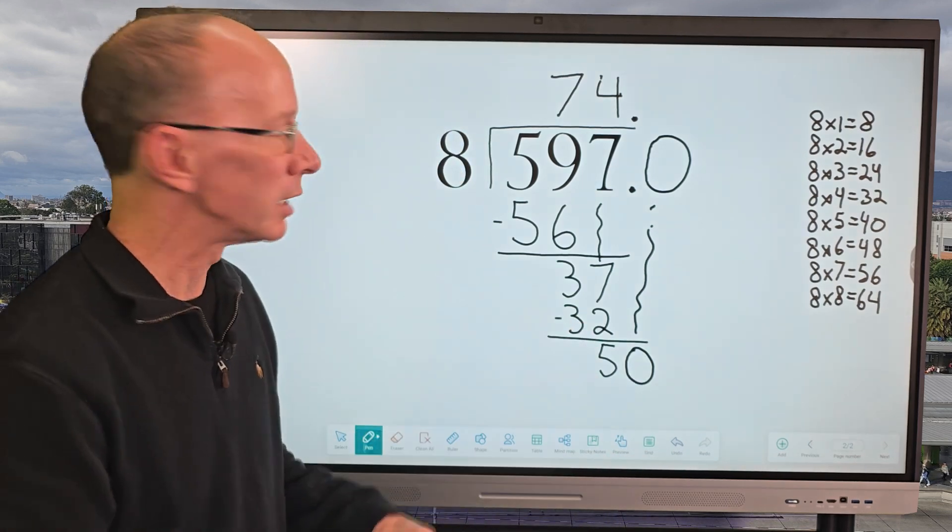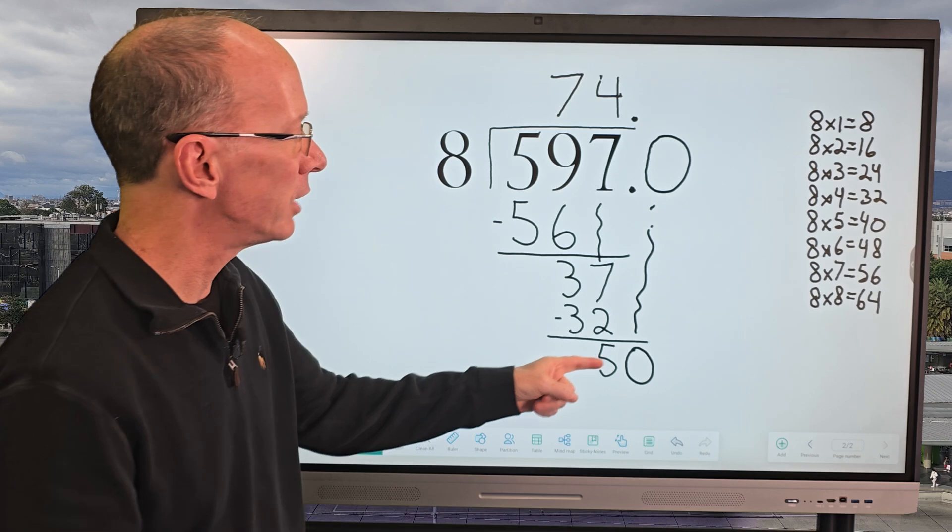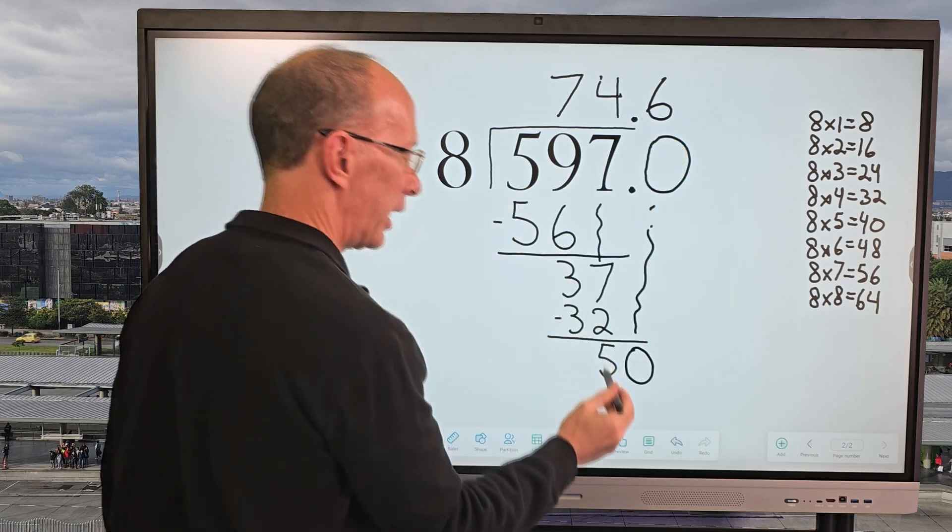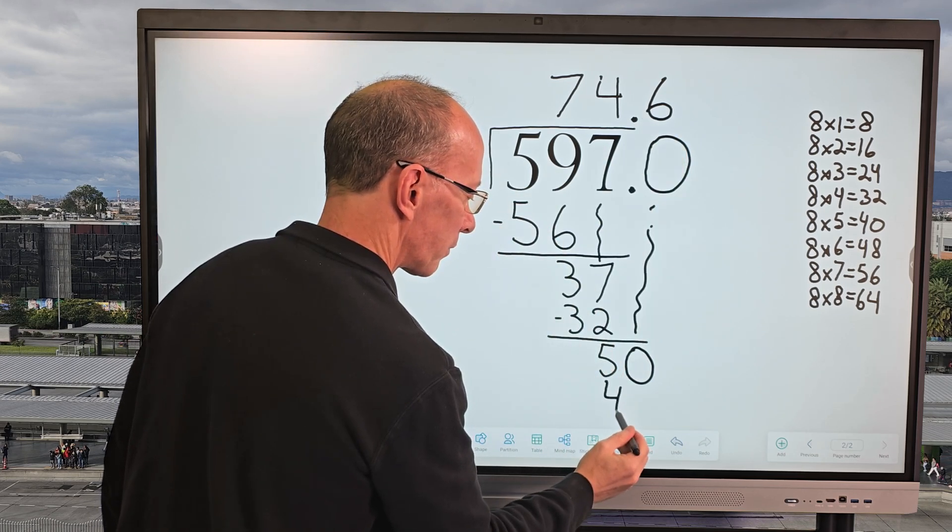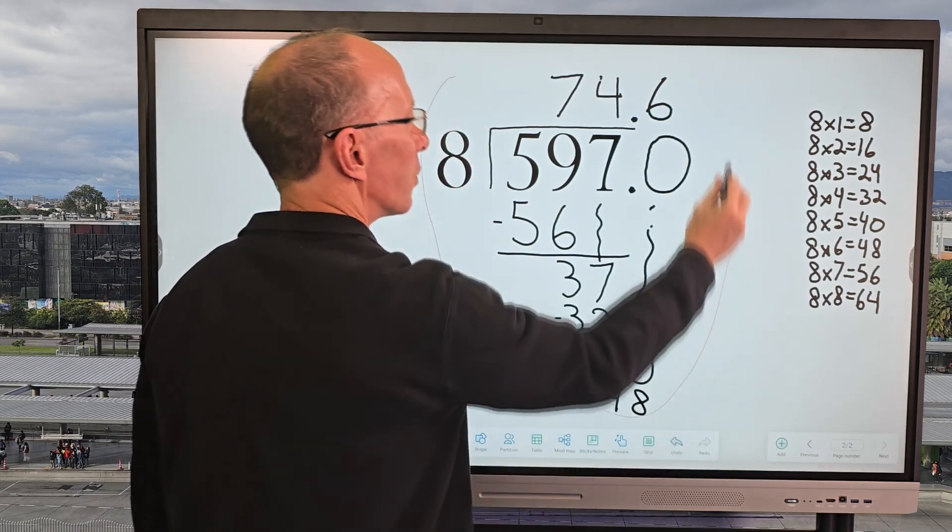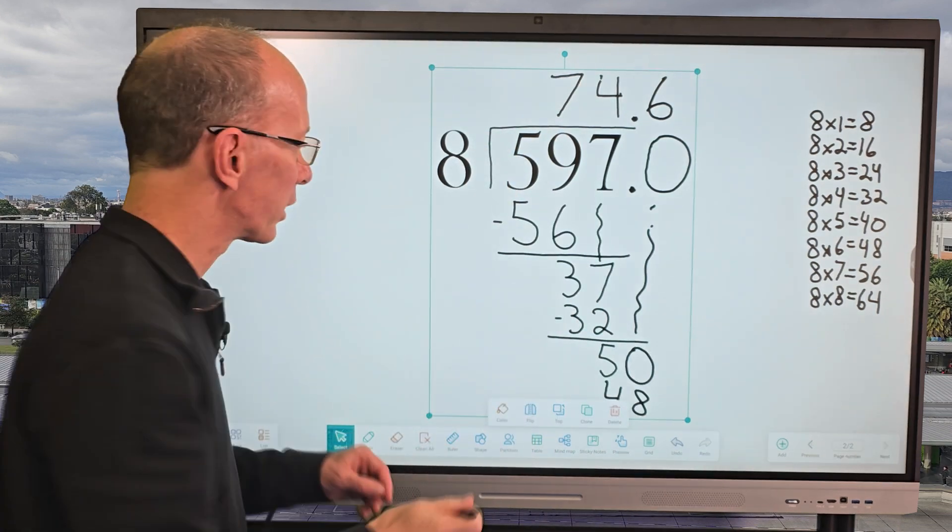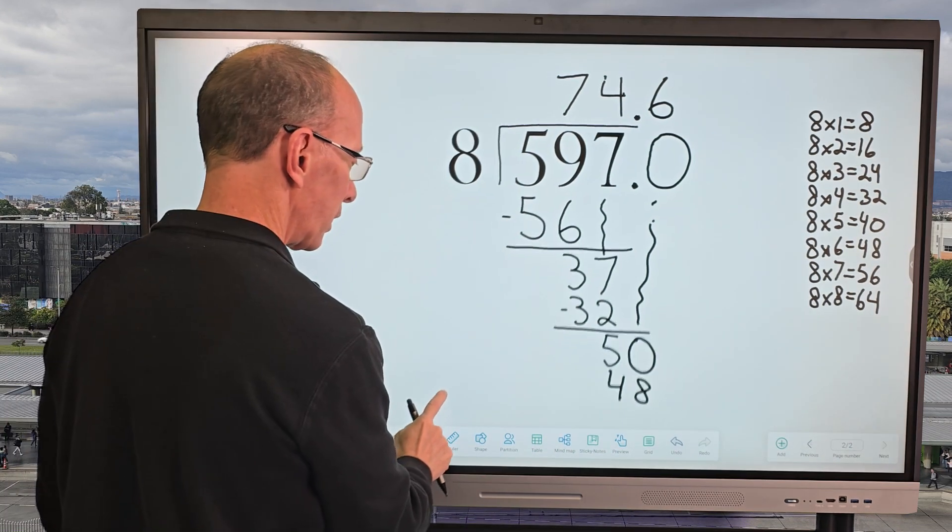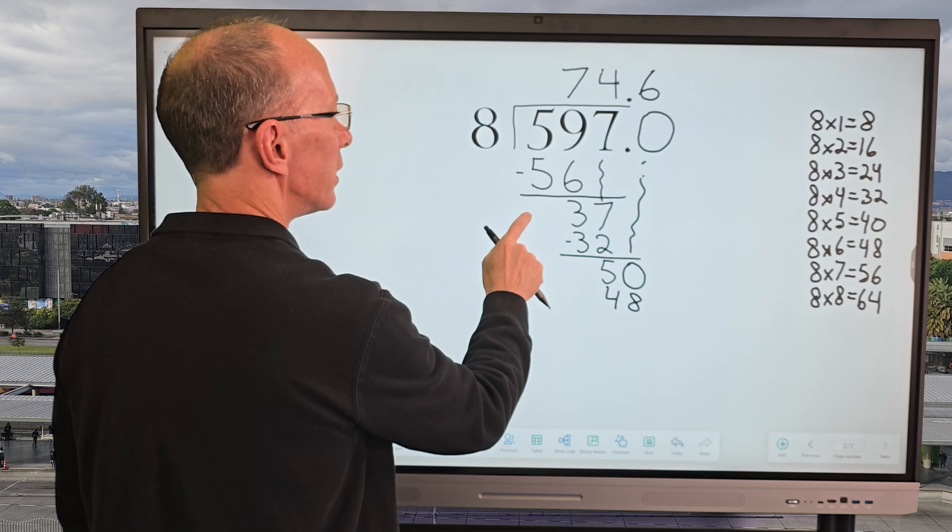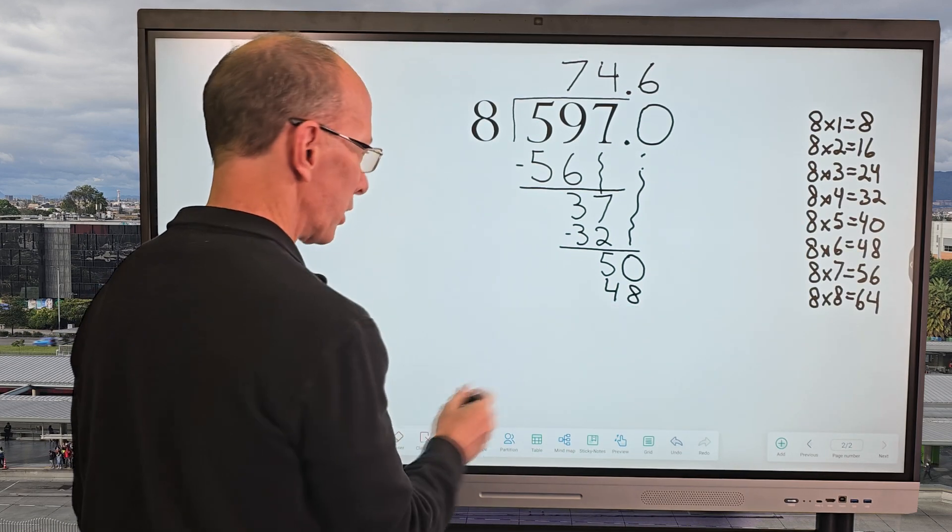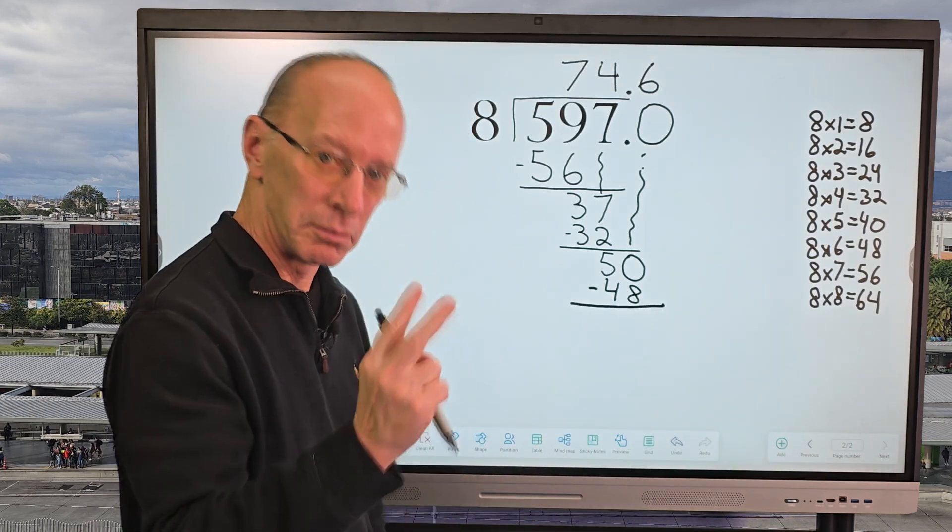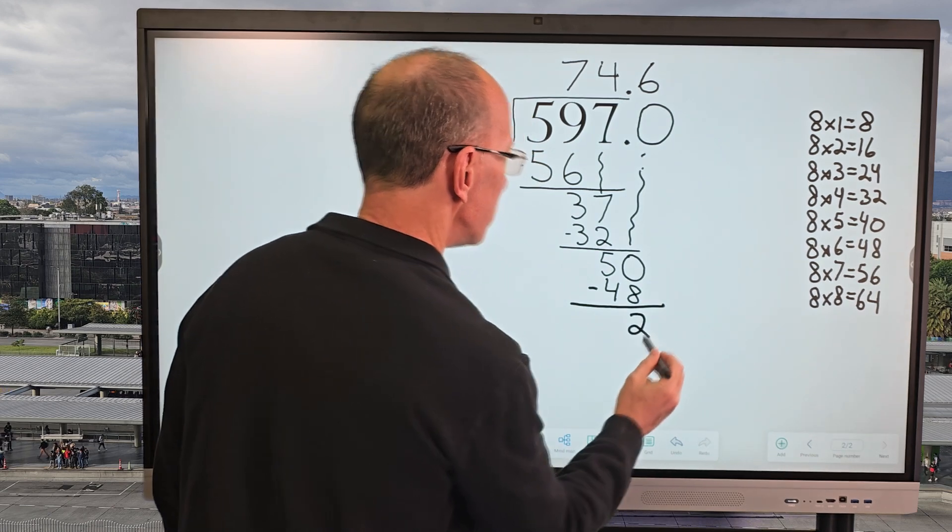And then start the whole process over again. How many times does 8 go into 50? Six times. I'm going to go ahead and put 6 right here. And 6 times 8 is 48. And then I need to make my problem a little bit smaller to work with here. So that's the really cool thing with working with a smart board. All right. So I'm going to go ahead and make that smaller. Move this over here. Just like that. And now I'm going to go ahead and subtract. So 50 minus 48 would be 2.